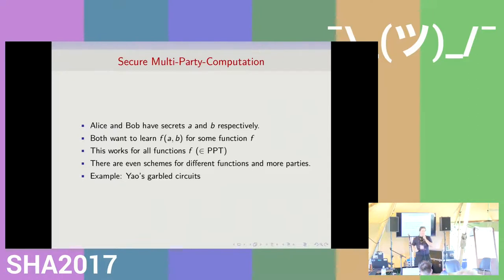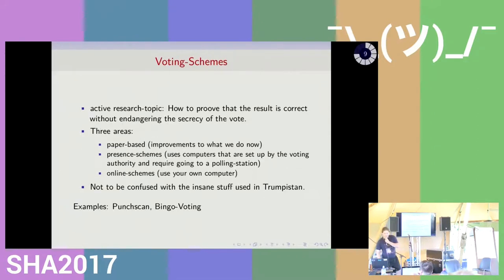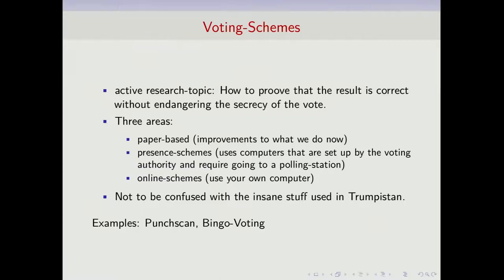Another application we could use it for is elections. We have 80 million people and they all have one party they want to vote for, and they all just care about the end result and not who voted how. You could do this with MPC, but this really is the sledgehammer approach and it is quite inefficient — there are actually more efficient protocols. This is basically a current research topic: how you can do elections in a way that is secure. This starts out by having three different kinds of elections. The first ones are paper-based elections — like the elections you are doing now.